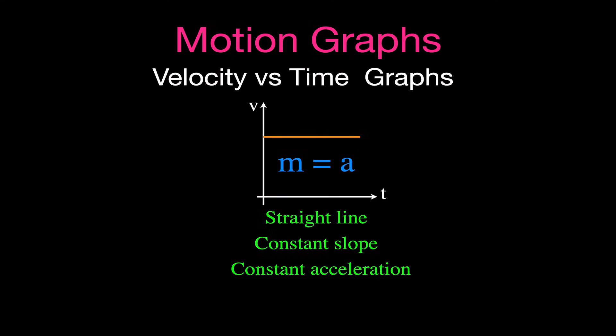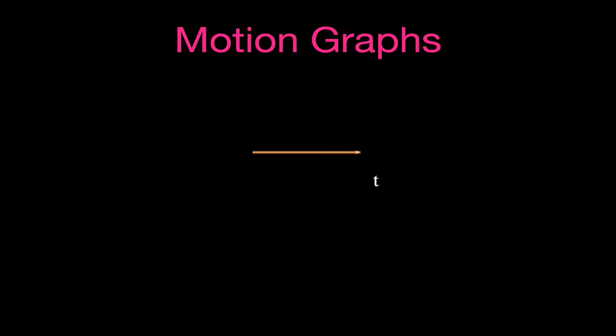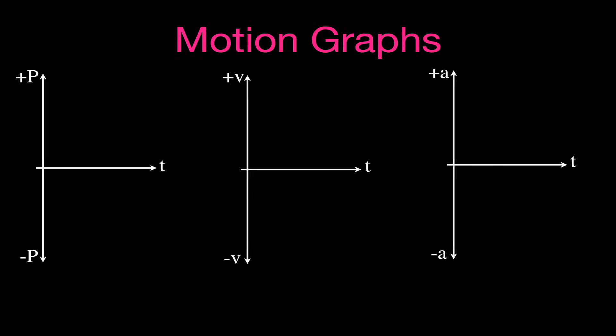Now we can go on and convert position to velocity to acceleration. There are seven different graphs you should be aware of. We're going to start at the beginning with the simplest graph and get a little more complicated as we go along.